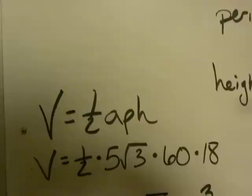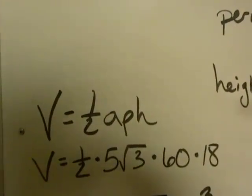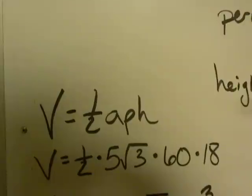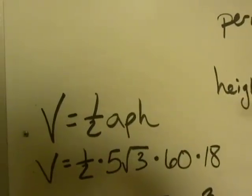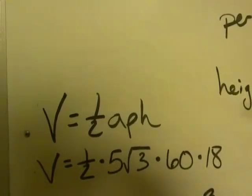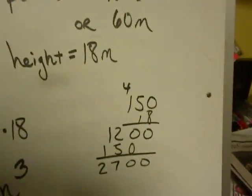Now remember, I like simplest radical form. So leave the radical 3 alone. Ignore it. Put the one-half, the 5, the 60, and the 18 into your calculator, or do the arithmetic by hand.